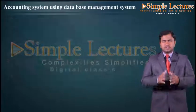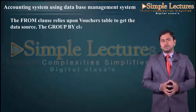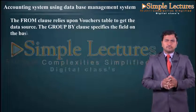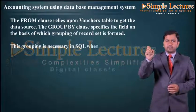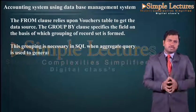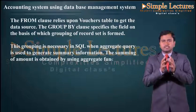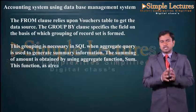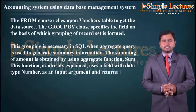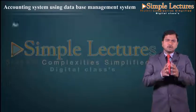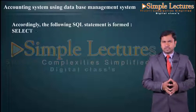The FROM clause relies upon the voucher table as the data source. The GROUP BY clause specifies the field on the basis of which grouping of the record set is formed. This grouping is necessary in SQL when an aggregate query is used to generate summary information. The summing of amount is obtained by using the aggregate function SUM, which uses a field with data type number as an input argument and returns its sum as output.